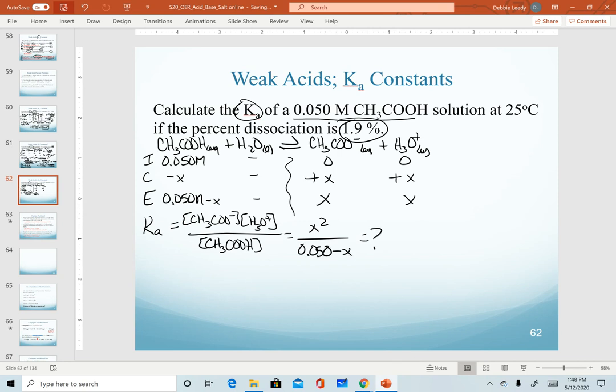We have our equilibrium expression first. Plugging in our equilibrium values. And then, of course, we want to solve for Ka here. So the difference in this question is that we are given the percent dissociation.